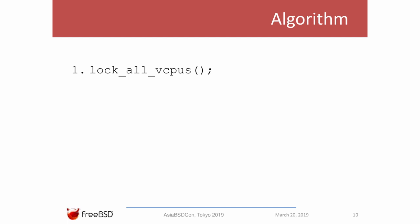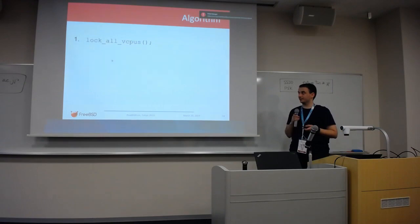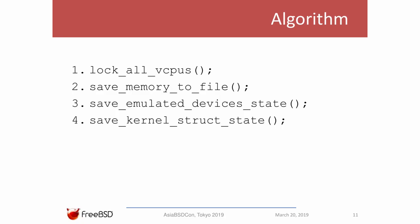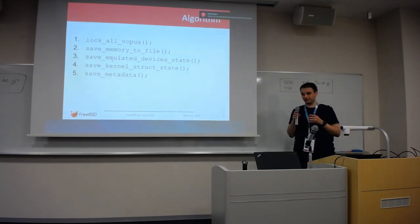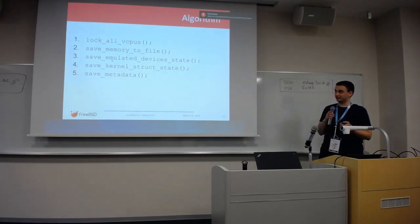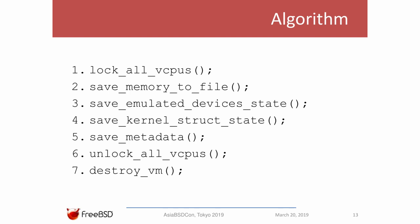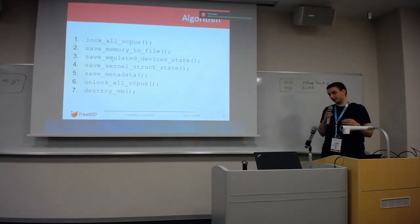In the generic code, this involves locking all CPUs to prevent the guest from continuing to run and making changes to device state, then saving the memory, the state of the emulated devices, and the kernel structures. We also save metadata used to identify where each block of each device's state is saved on disk in the data files. Then we resume guest running, and when suspending, destroy the virtual machine — because when the VM is suspended, you don't want it to continue running.